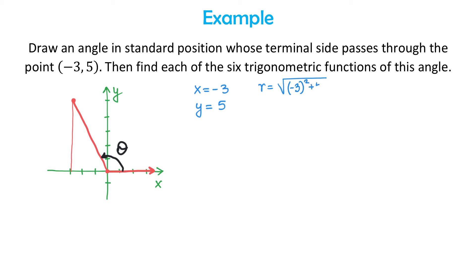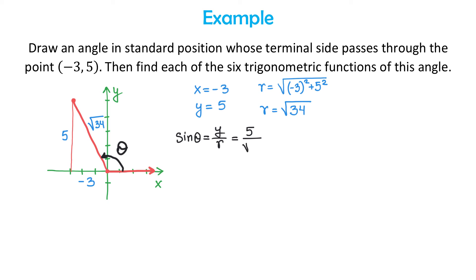We find R using the Pythagorean theorem: R equals the square root of (−3)² + 5², which is the square root of 9 + 25 = √34. So on the graph: x is −3, y is 5, and R is √34. Now for sine of theta: by definition sine is y over R, so sine θ = 5 over √34. Rationalizing the denominator by multiplying numerator and denominator by √34 gives 5√34 over 34.